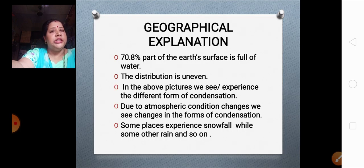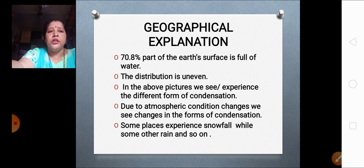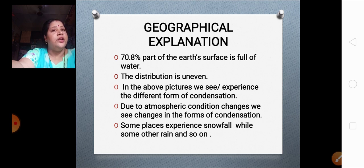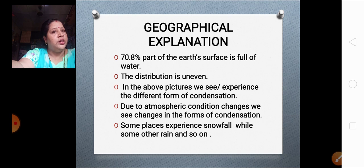Now, as you all know, 70.8% — generally we say 71% — of the earth's surface is full of water. We have learned about it. But this water present on the earth's surface is not at all evenly distributed. It is unevenly distributed: somewhere it is too much, somewhere it is too less. There is so much unevenness in the water distribution on the earth's surface.